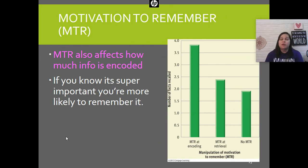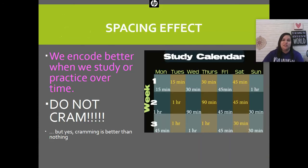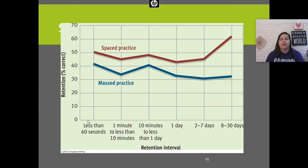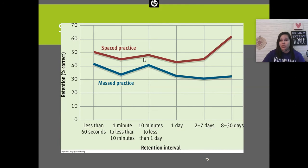Your motivation to remember also affects how well you encode information — if you know something is super important, you're more likely to remember it. The spacing effect revisited: we encode better when we study or practice over time. Cramming — or massed practice — is better than nothing, but the problem is you tend not to retain information as well over time. Spaced-out practice wins when comparing retention, especially long-term — you'll recall information studied over time much better than information crammed all at once.